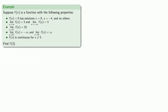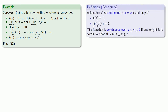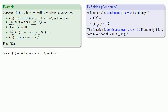How about f of 3? Again, we know our definition of continuity, and the key point is that the function value equals the limit. Since f of x is continuous at x equals 3, we know that f of 3 equals the limit as x approaches 3 of f of x, which we've already determined — so f of 3 equals 10.